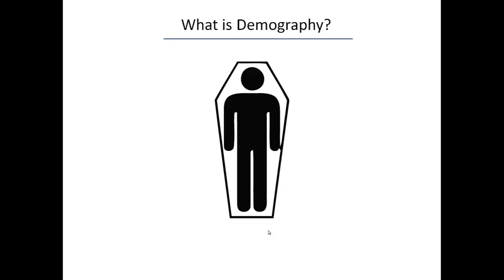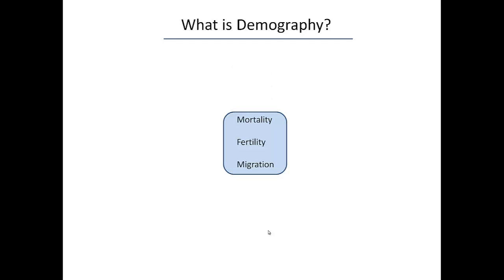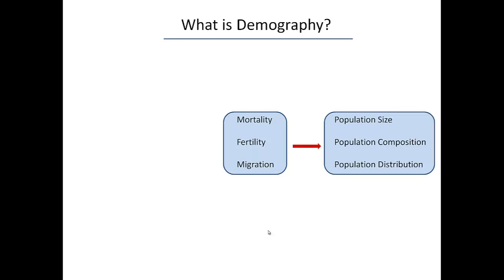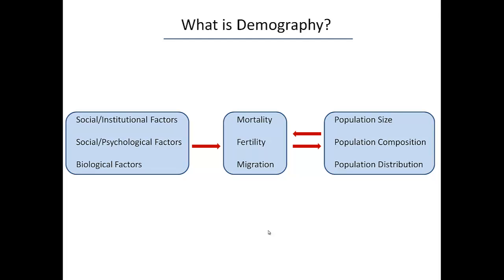In and of itself, that's pretty dry. Fertility, mortality, and migration affect population composition, size, and distribution, and vice versa. Social and biological factors affect population processes and composition, and vice versa.